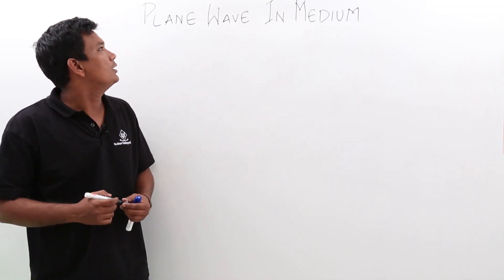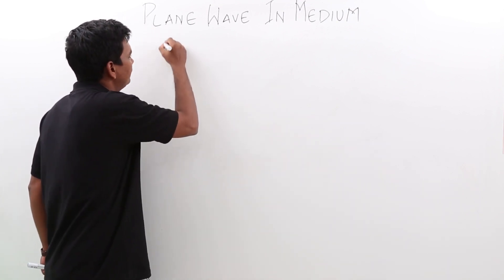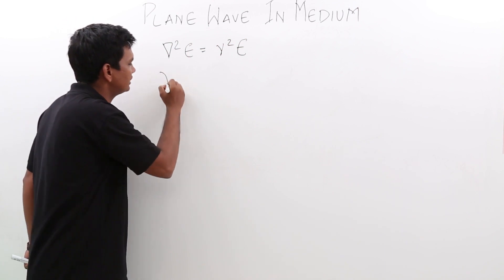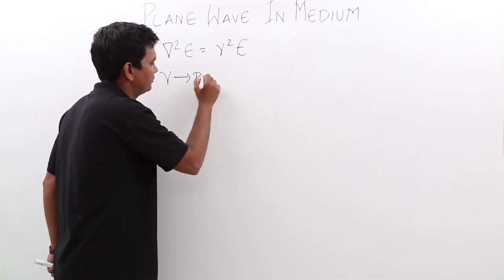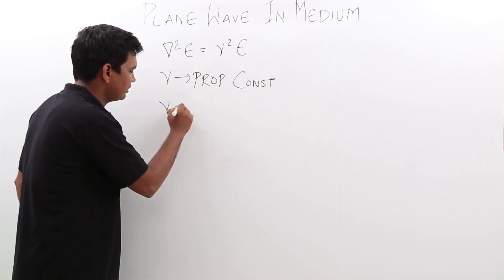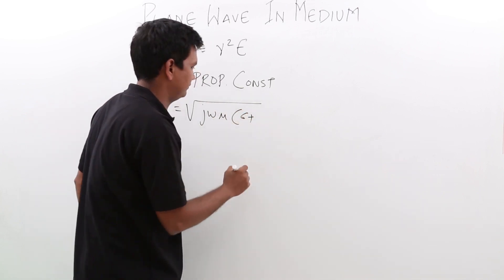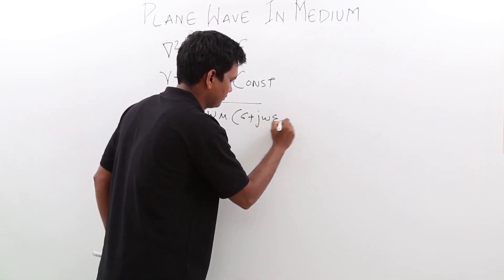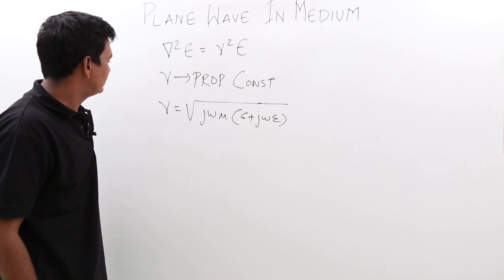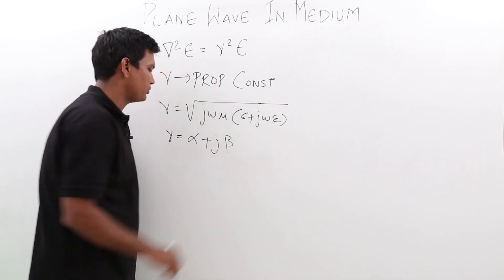In this class, we will see the plane wave in different medium. A plane wave would be given by del square E is equal to gamma square E. Gamma is called the propagation constant, where gamma is given by the square root of j omega mu times (sigma plus j omega epsilon). This gamma is also equal to alpha plus j beta.